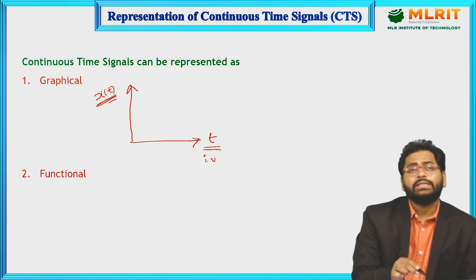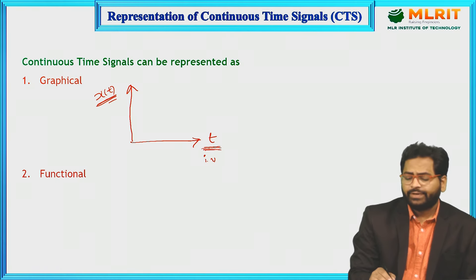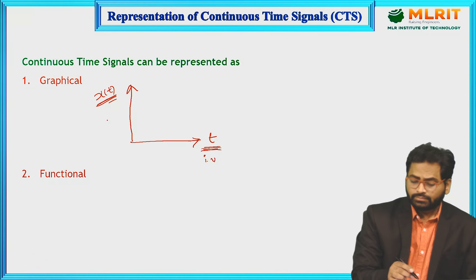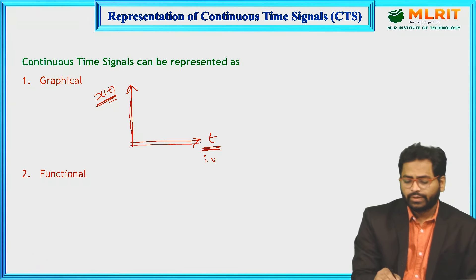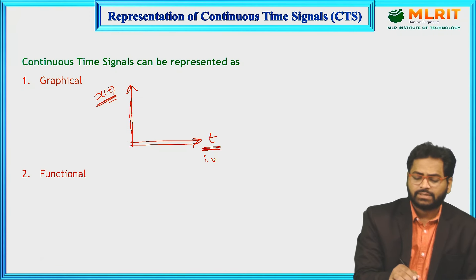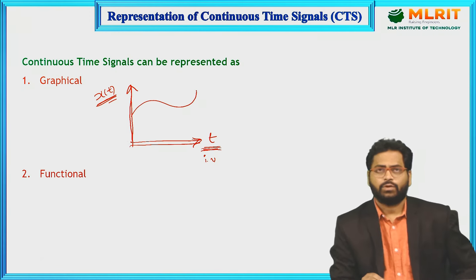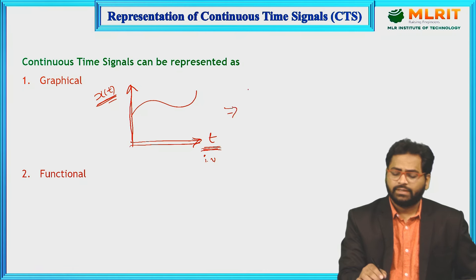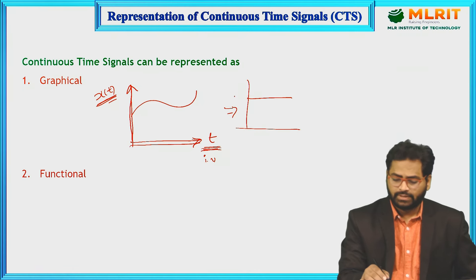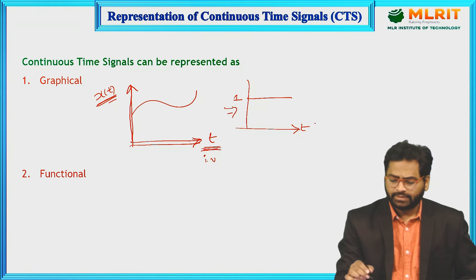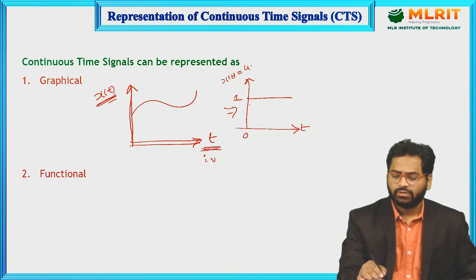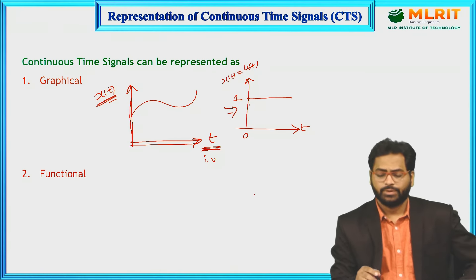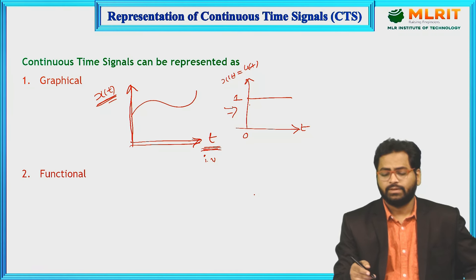Graphical method means we are representing each and every signal in a pictorial format. For the signal x(t), the independent variable is t and the amplitude is x(t). This signal x(t) depends on the independent variable t. In two dimensions, if I take a basic signal with amplitude 1 — this is a unit step function, which we will come to later with basic types of signals.